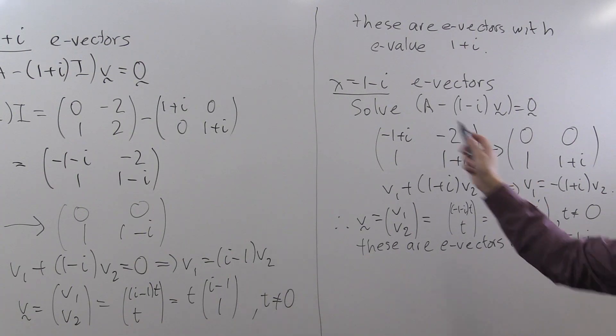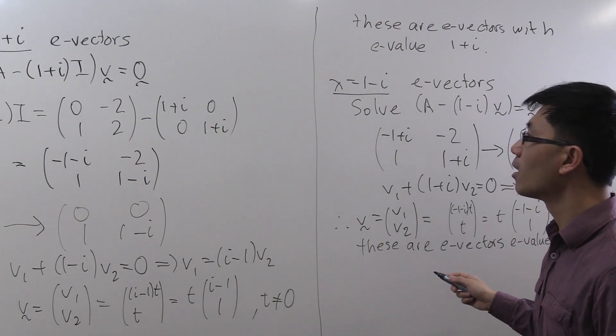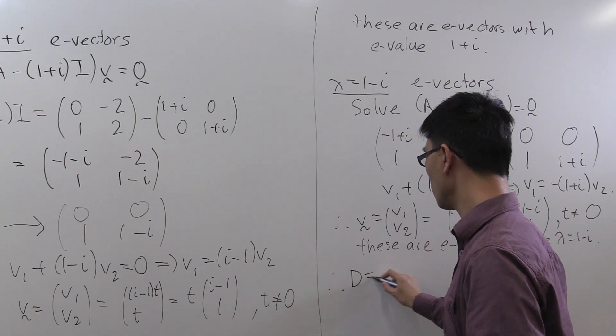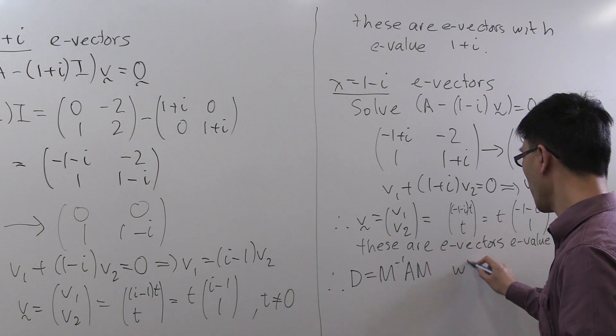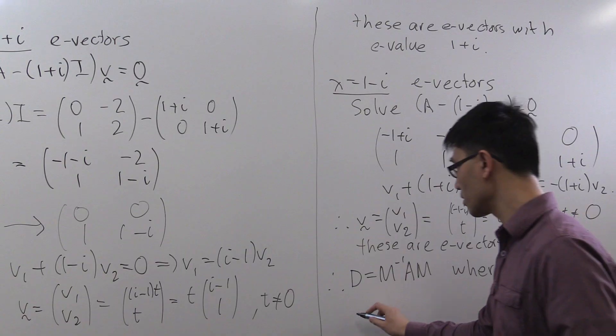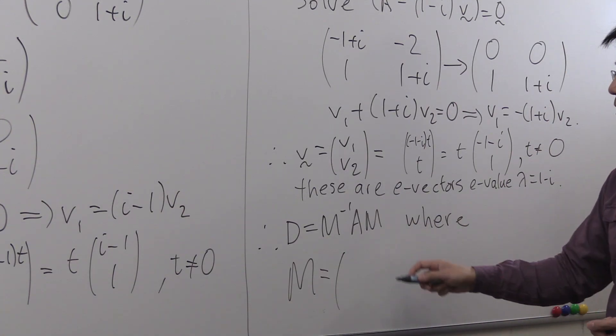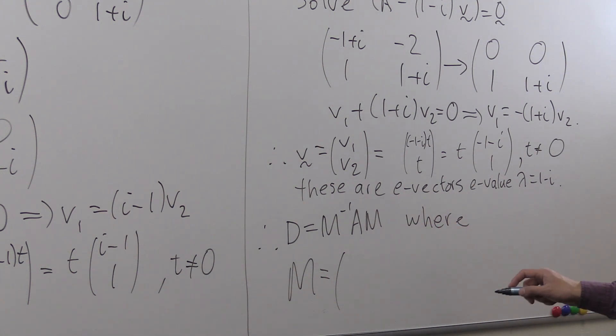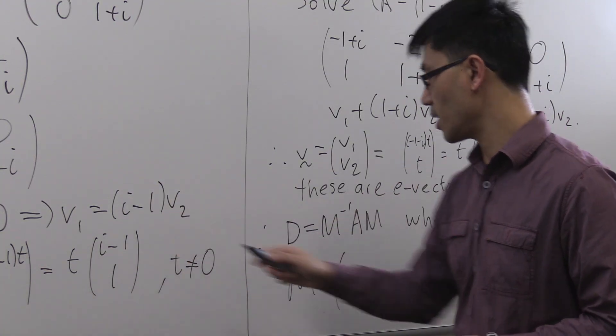And now, what's the conclusion that we can make from these calculations? We can now finally diagonalize our matrix A. So therefore, D equals M inverse AM, where the procedure for writing down the answer is firstly, for the matrix M, we put down a basis of eigenvectors for the columns. So in this case, we have, on setting t equals 1, an eigenvector here.